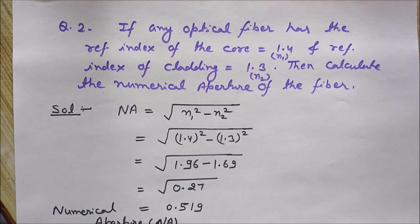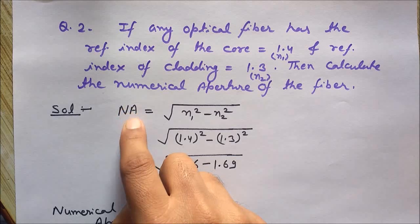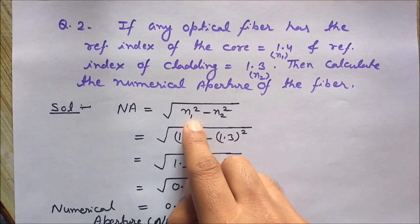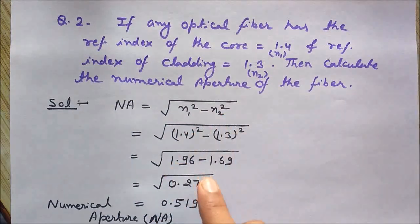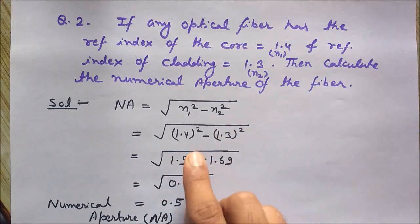So the formula for numerical aperture in this case is under root of n1 square minus n2 square. In the previous case we calculated the numerical aperture from another formula, n naught sine theta of acceptance angle if we have the acceptance angle, but here we will use this one.